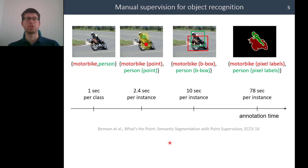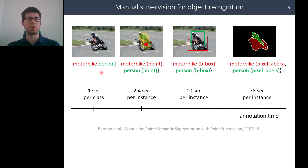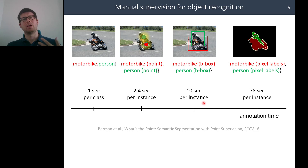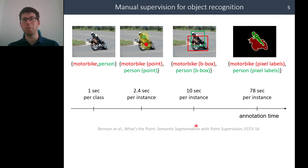For image-level labels — such as 'motorbike' and 'person' in an image — it may take about one second per class. When we want more detailed annotations, such as bounding boxes or pixel-level labels, this takes considerably longer, according to the referenced paper.